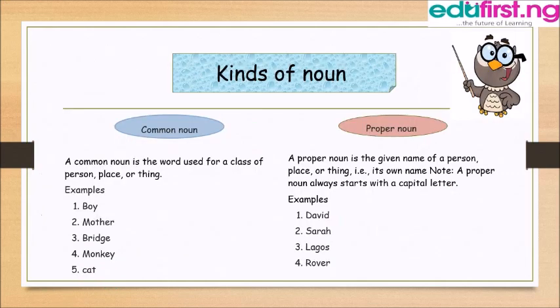There are two major categories of noun. We have the common noun and the proper noun. The common noun is a name used for a class of any person, animal, place or thing — for example, boy, mother, bridge, etc.